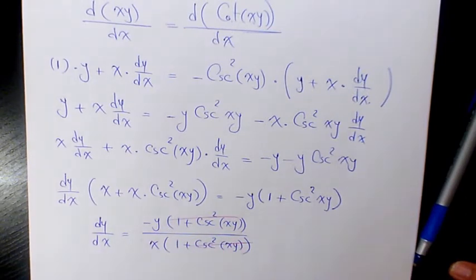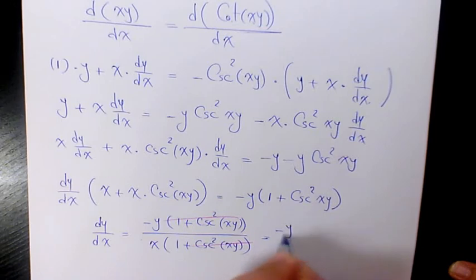Then these two cancel out. We're going to have negative y over x.